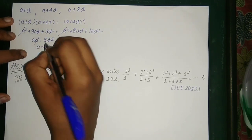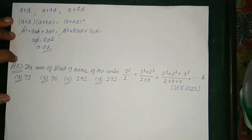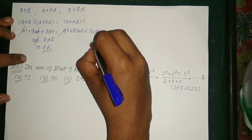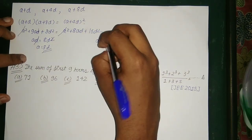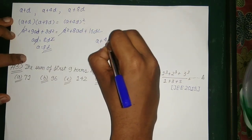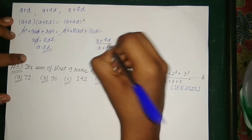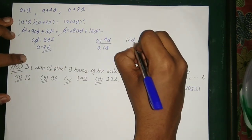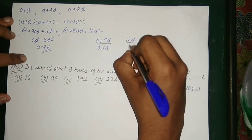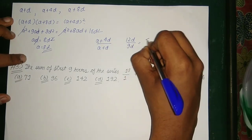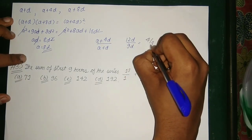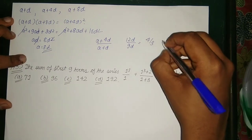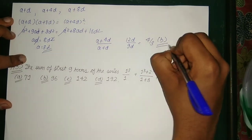Now we need to find the common ratio of the GP, which is given by (a + 4d)/(a + d). Substituting a = 8d, we get 12d/9d = 4/3. Therefore 4/3 is the common ratio of the GP, so the correct option is option B: 4/3.